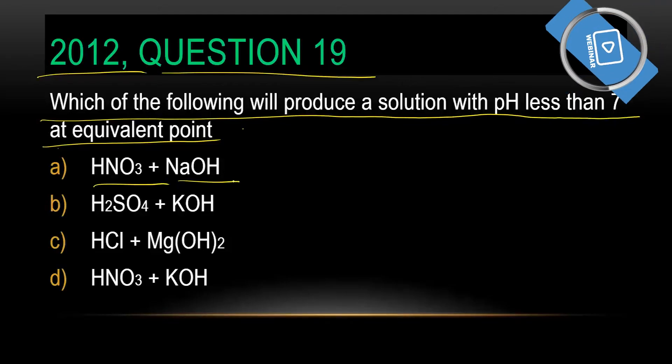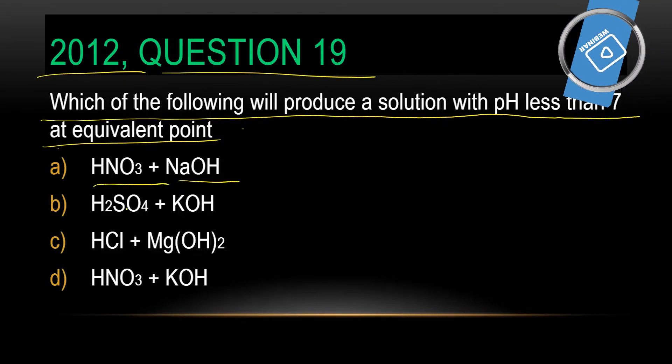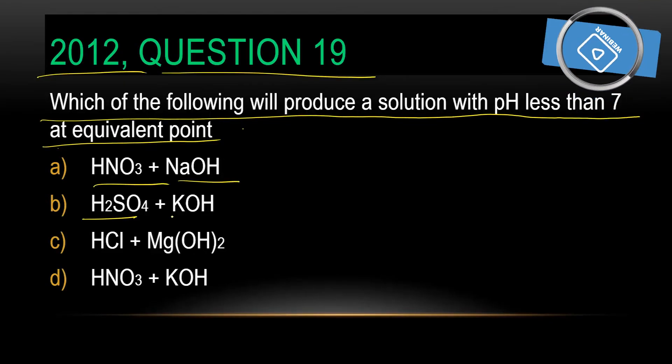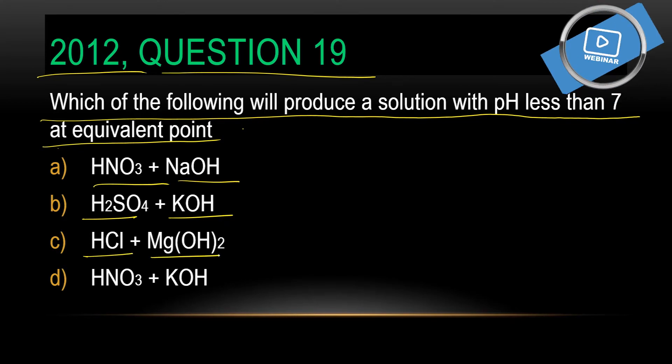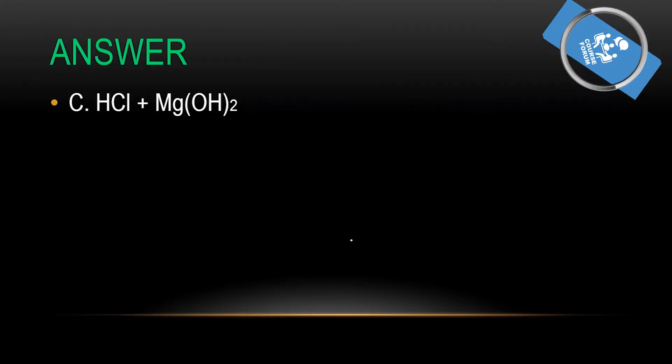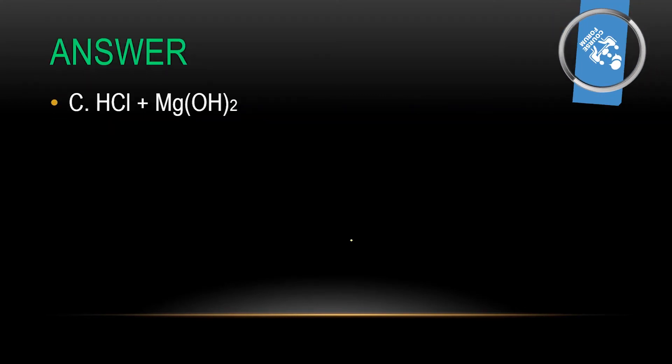This is strong acid, strong base or strong alkali. This is strong acid, strong alkali. This is strong acid, weak alkali. So the answer is C: hydrochloric acid and magnesium hydroxide.